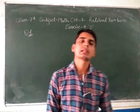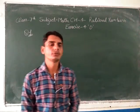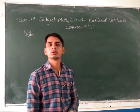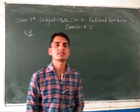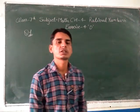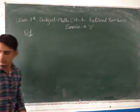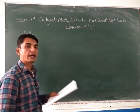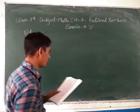Welcome back everyone in class 7. Chapter number 4, Rational Numbers, is going on. Today we will discuss a new exercise, Exercise 4D, and firstly see question number 1. Question number 1 is: find the additive inverse.